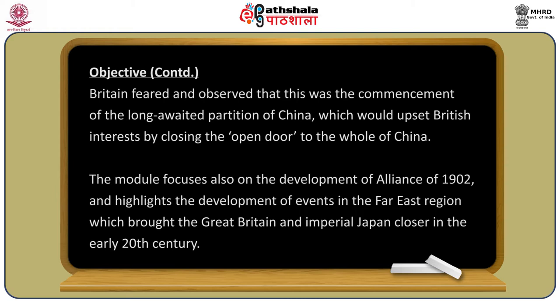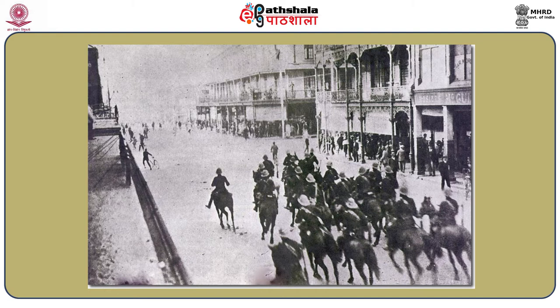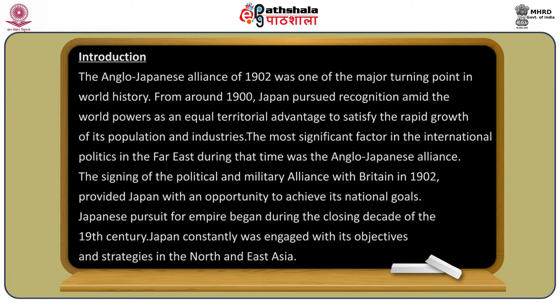Britain feared this was the commencement of the long-awaited partition of China, which would upset British interest by closing the open door to the whole of China. The module also highlights developments in the Far Eastern region which brought Great Britain and Imperial Japan closer in the first decade of the 20th century. The Anglo-Japanese alliance of 1902 was one of the major turning points in world history. From around 1900, Japan pursued recognition among the world powers as an equal, seeking territorial advantage to satisfy the rapid growth of its population and industries.